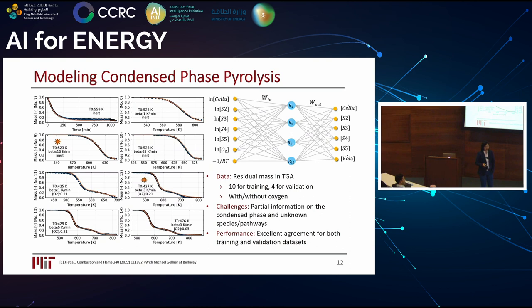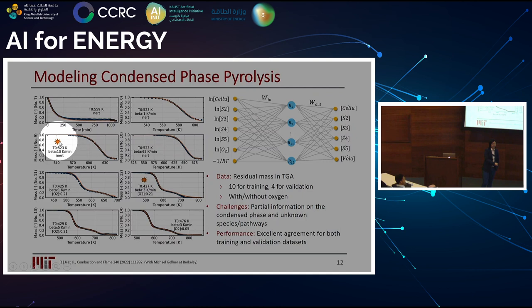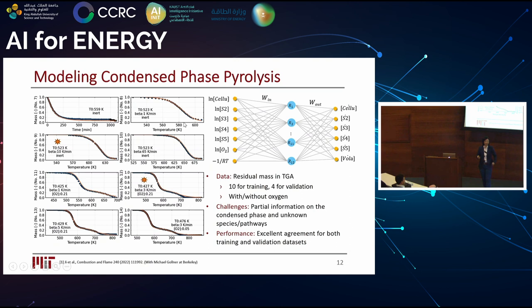For machine learning, you'd think you need a lot of data. But in this case, we demonstrated that with only 10 experiments as training and four as validation, we can achieve really good results. The two starred ones are the validation results, and the rest are training data — this is the TGA curve tracking mass change over heating temperature.